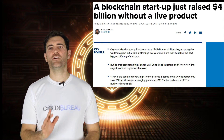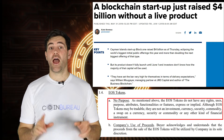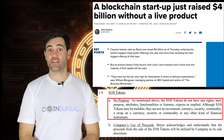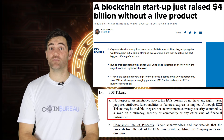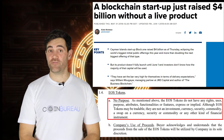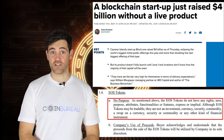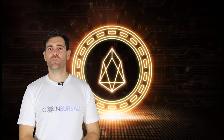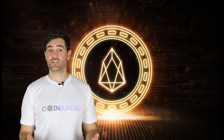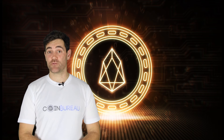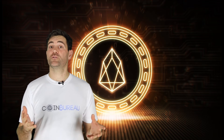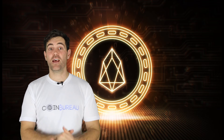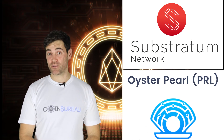The EOS token purchase agreement stated: 'The EOS tokens do not have any rights, uses, purposes, attributes, functionalities, or features. They are not an investment, currency, security, commodity, or any other kind of financial instrument.' As a result, the question arose as to whether or not the token was valid and why investors were dumping so much money into it. Of course, that was back in the golden years of the 2017 bull run, and investors were throwing their funds into any project with a snazzy website.